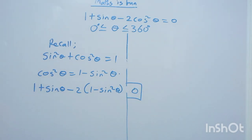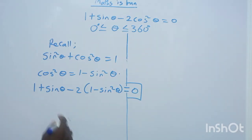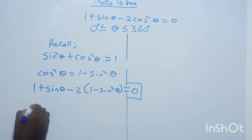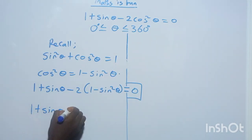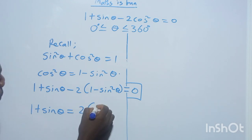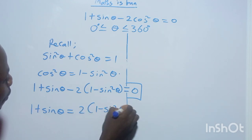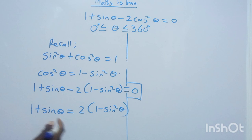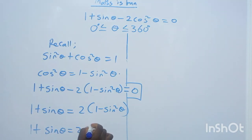That is what we have, equals to zero. So this can be rearranged: 1 + sinθ = 2(1 − sin²θ), which gives us 1 + sinθ = 2 − 2sin²θ.